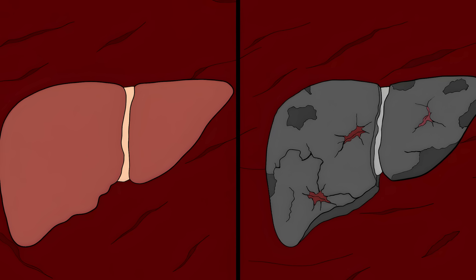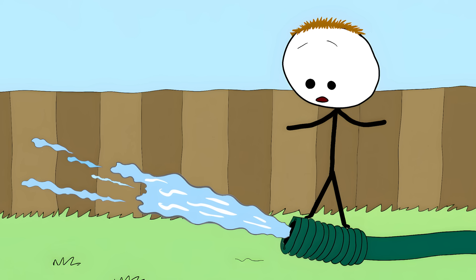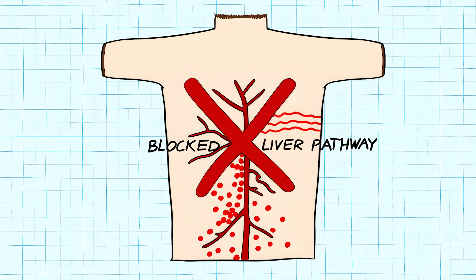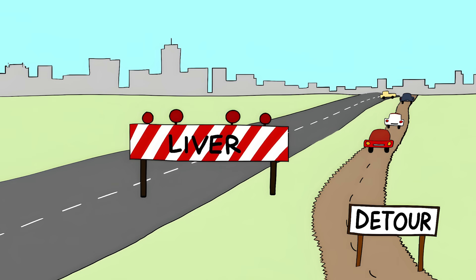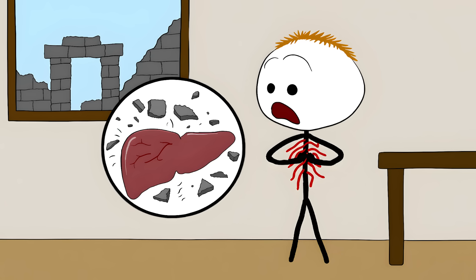When your liver gets damaged, it starts to scar up and harden. Think of it like a garden hose getting squeezed. The water has to go somewhere else. In this case, the water is your blood, and that somewhere else is through these new veins that pop up on your skin. Your body is basically creating a detour system because the main highway, your liver, is blocked.